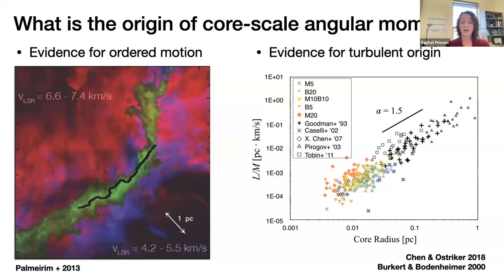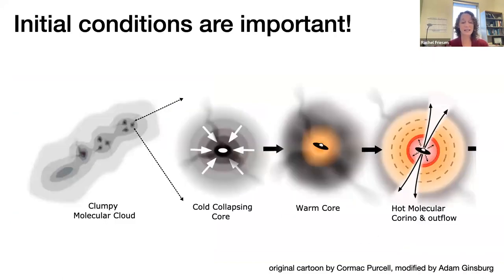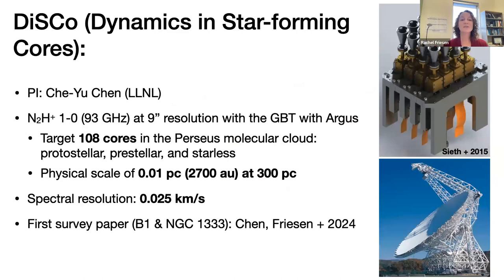There's additional evidence for dynamically significant turbulence on core scales from misalignments between outflows and the magnetic field, disk orientation and filamentary structure, and core elongation and local magnetic field orientation. We're looking at cores on the cusp of collapsing to form protostars, or protostellar cores that still have significant gas available to accrete and form disks. We really need kinematic data on small scales within cores to provide initial conditions for dense collapse and disk formation.